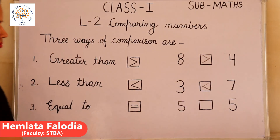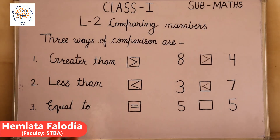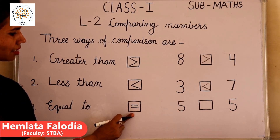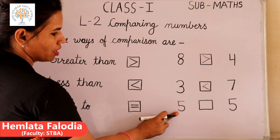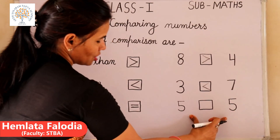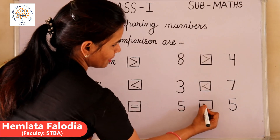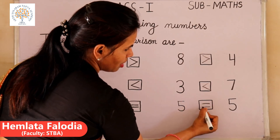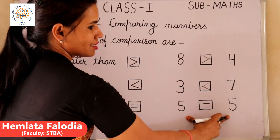We are comparing between two numbers. Next, come to number three — the third way to compare numbers: equal to. Equal to means if the two numbers are the same value, these numbers are equal to each other. This is the sign of equal to. There are two numbers: five and again five. Both are in the same value, so we will put the sign of equal to.